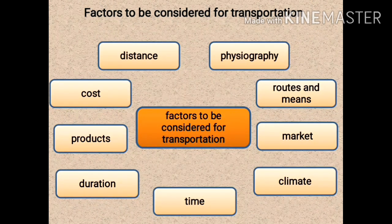The next factor is climatic condition. Climate change or extreme weather — such as storms, snowfall, heavy rainfall, or floods — can cause delays as well as permanent or temporary closure of routes. This leads to obstruction and inconvenience for transportation. Therefore, transportation routes must be developed keeping the climatic condition of that region in mind, so that climate does not cause obstacles to transportation.